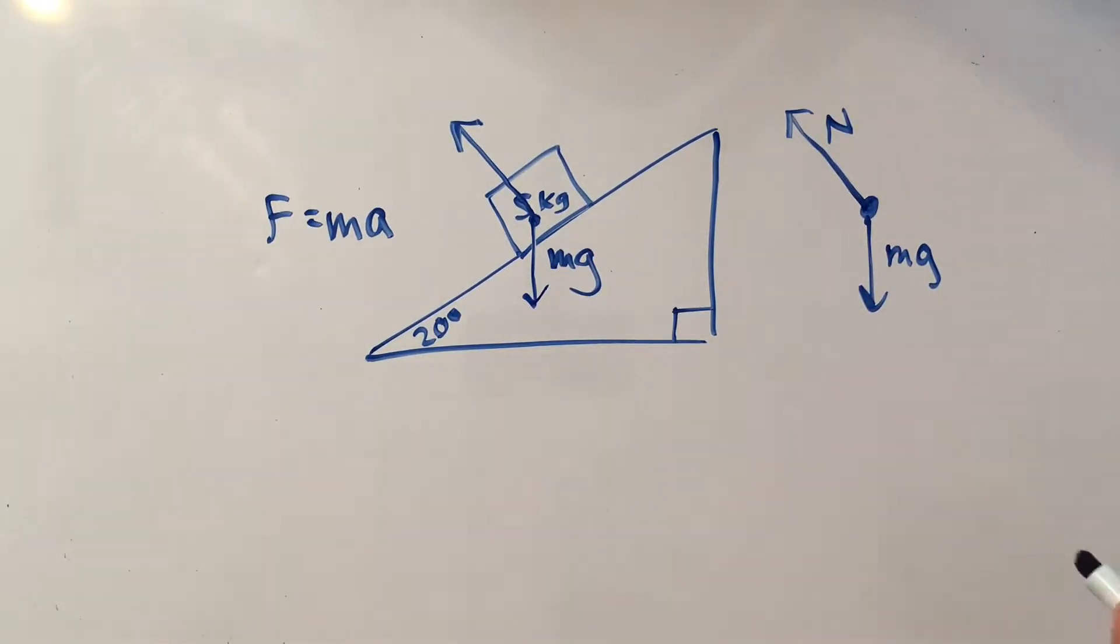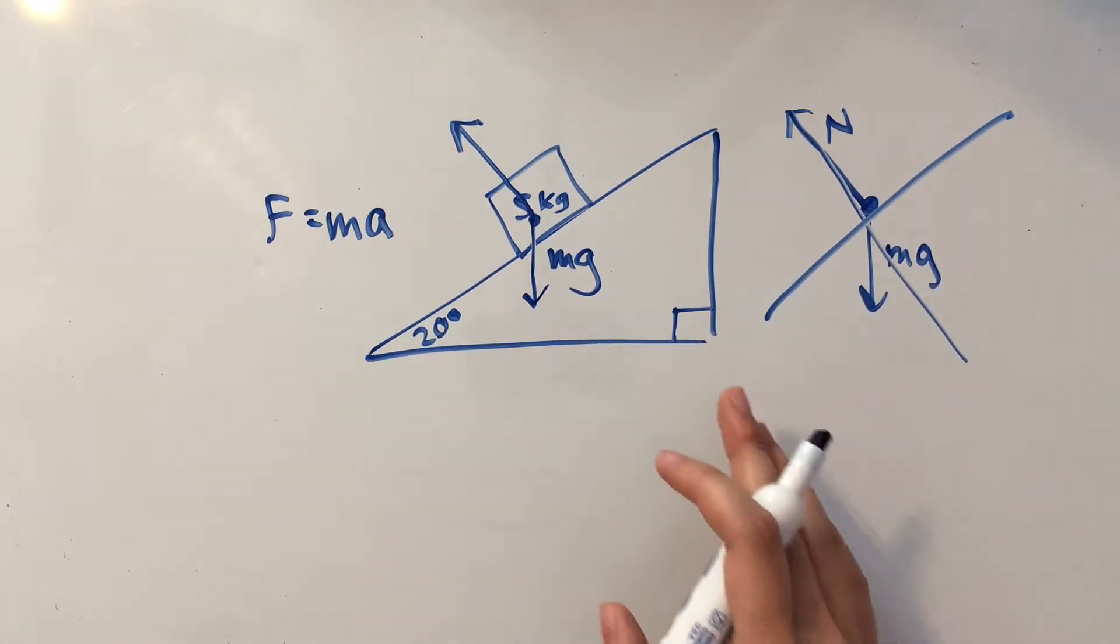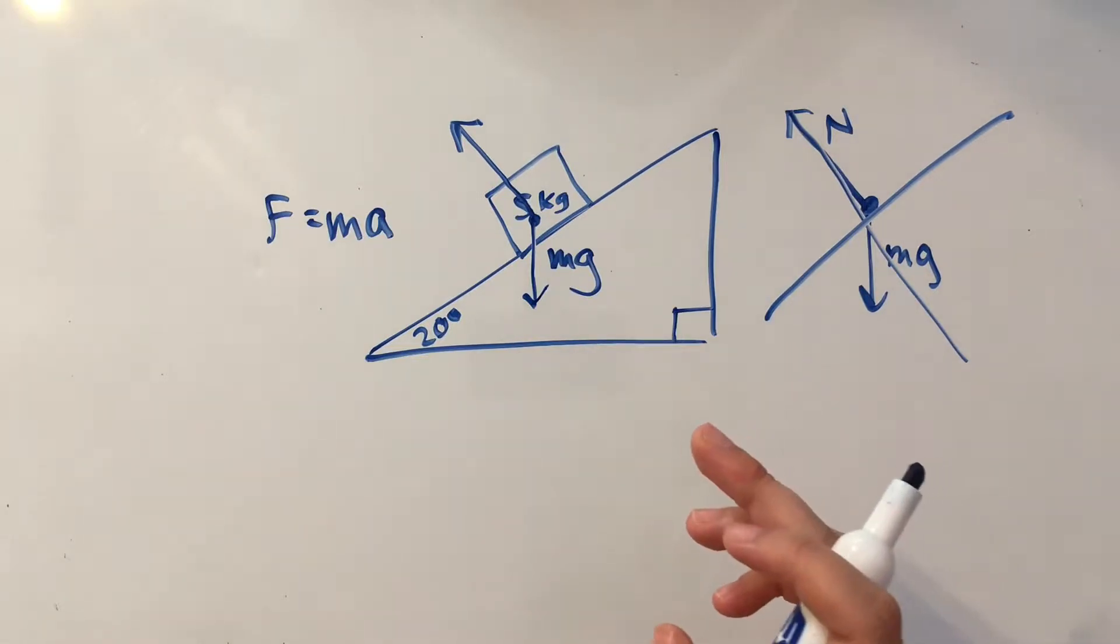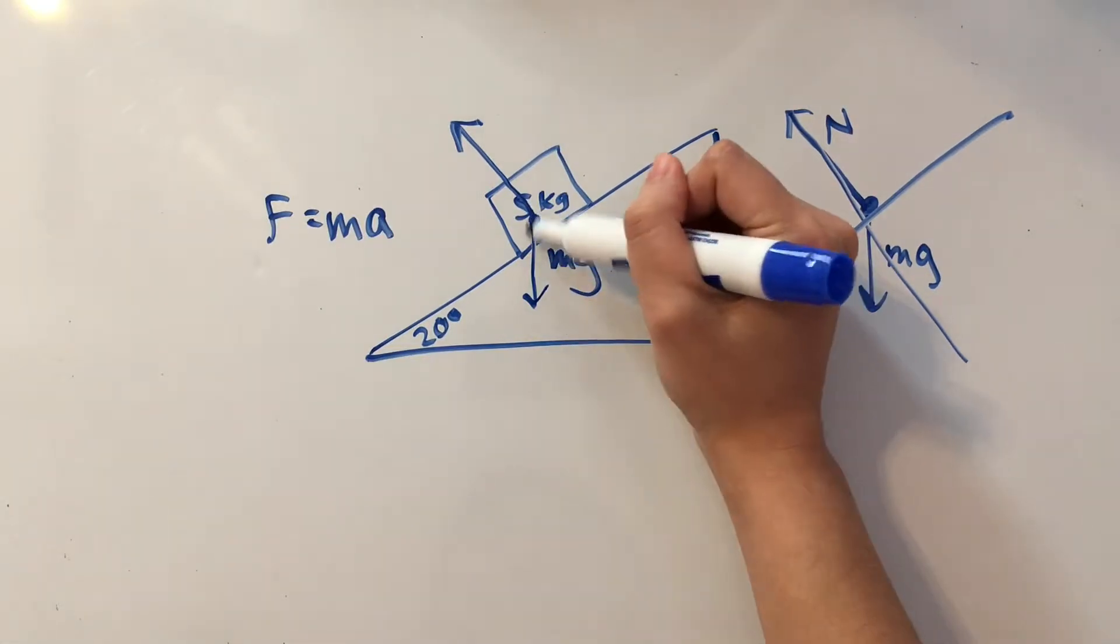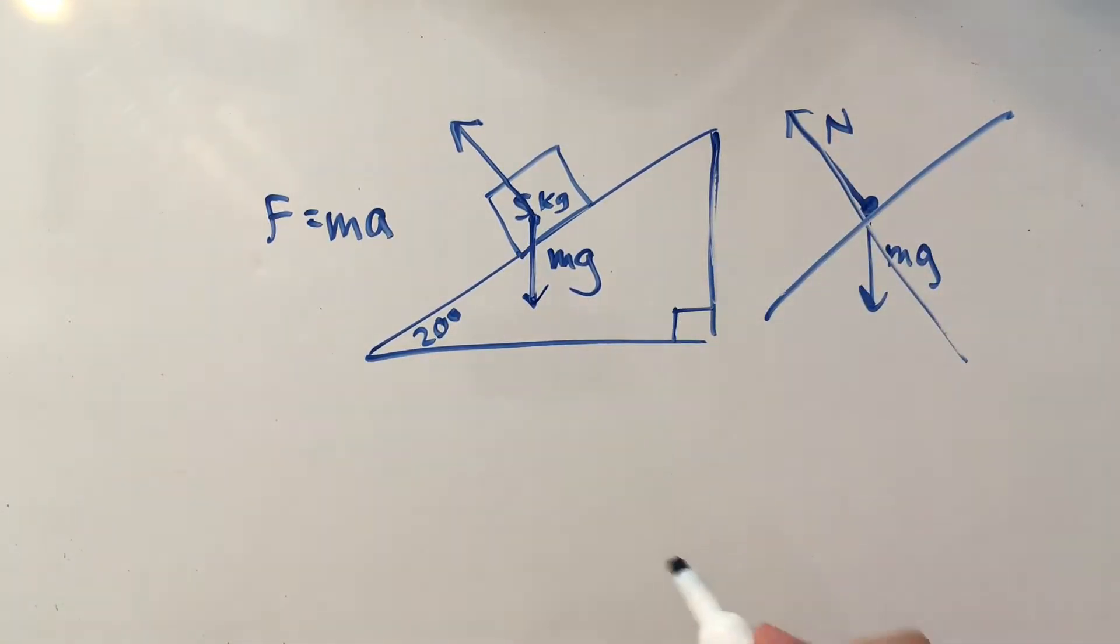We'll be making a new reference frame to line up with the normal force. So this part is going to be a little confusing, so I don't blame you if you rewatch this part over again a couple of times. This force is going to be parallel with this side of the ice hill.